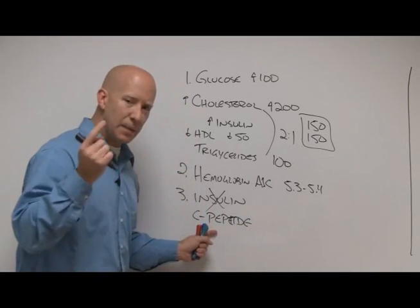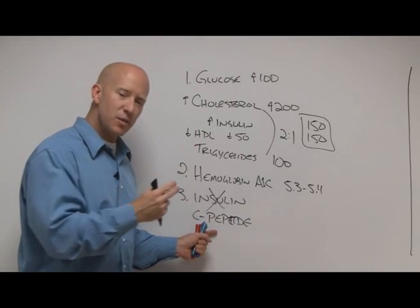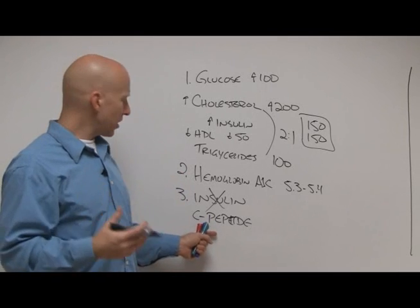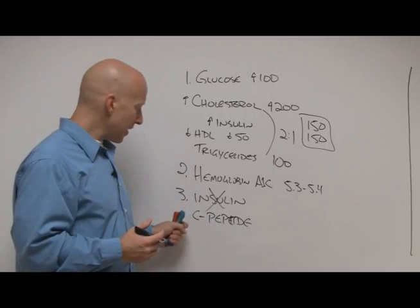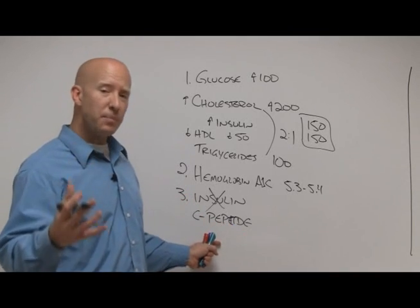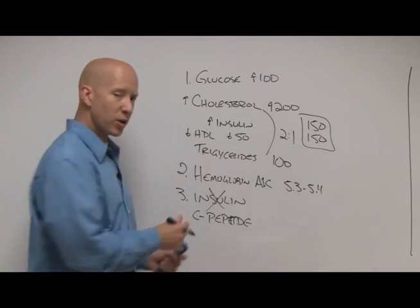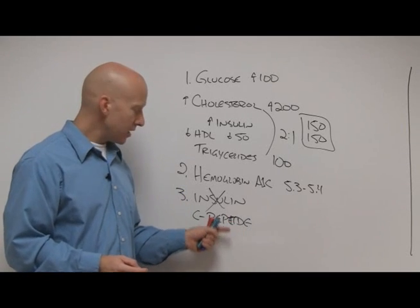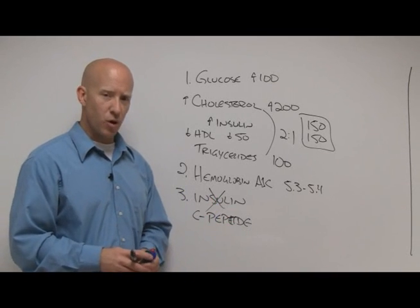C-peptide is made in the same quantities and amounts as your body makes insulin, but it has a longer half-life. So if you're curious what your insulin levels are, then perhaps you instead want to look at C-peptide. If C-peptide is high, chances are you're having an overproduction of insulin as well. If your C-peptide levels are normal, then chances are your insulin production is normal as well.